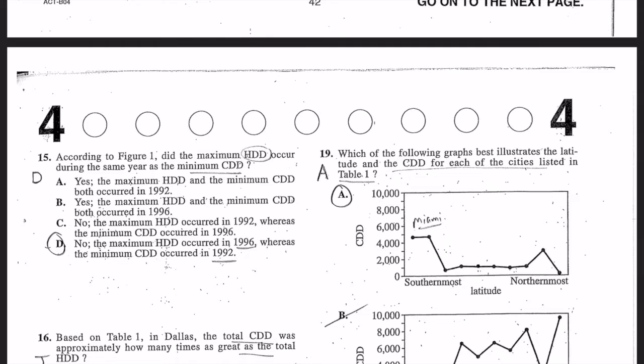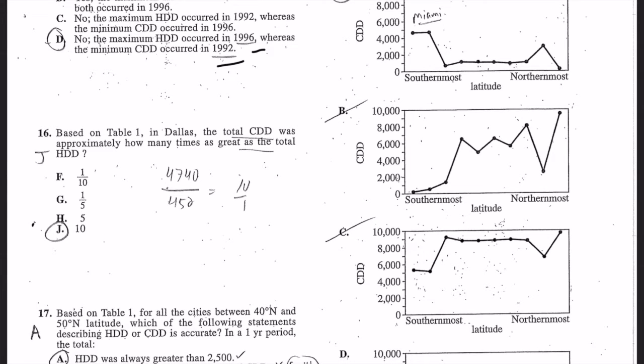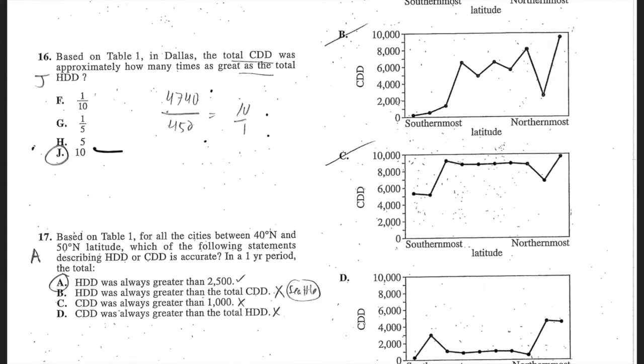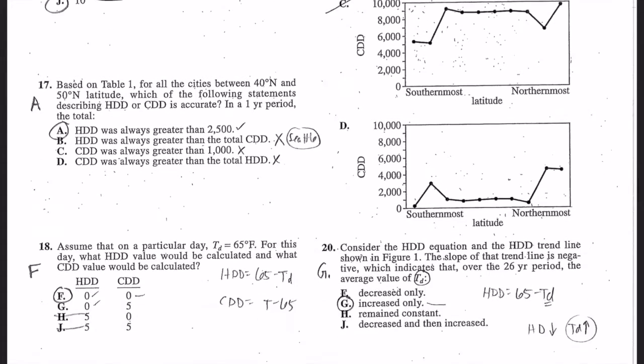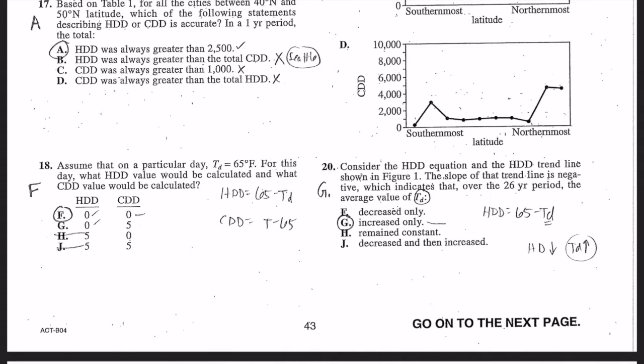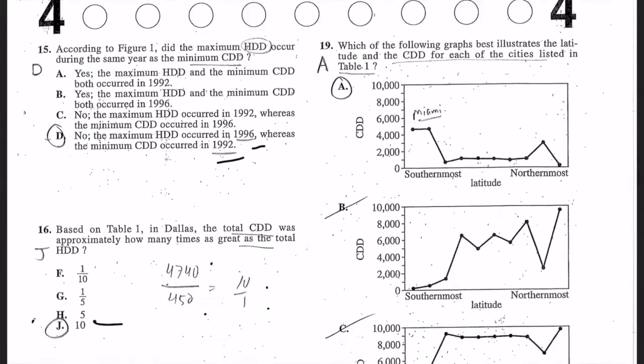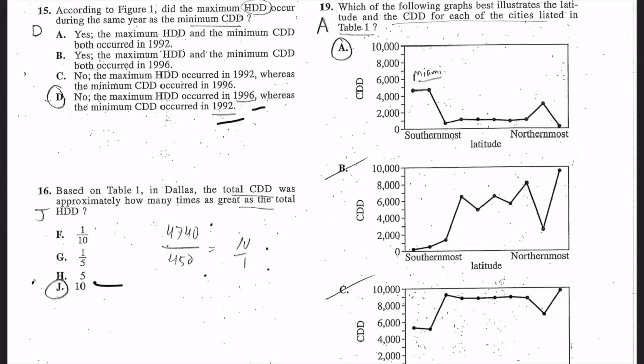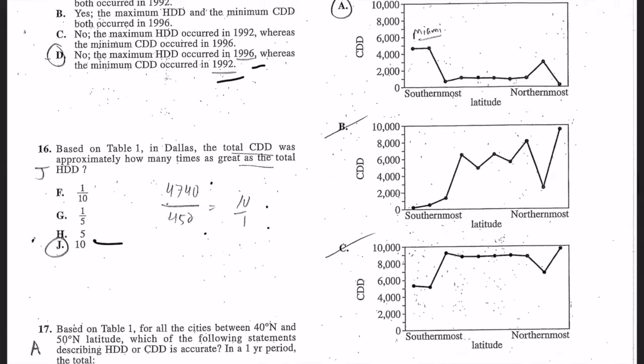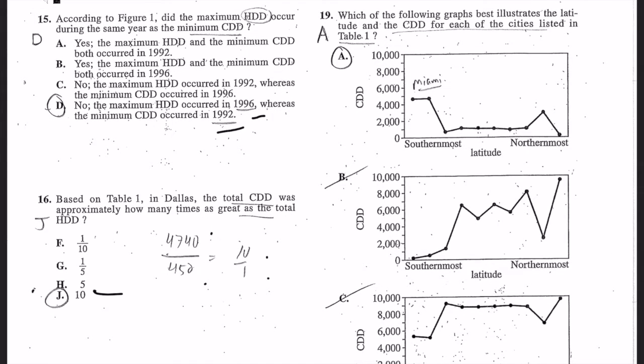Number 15: the minimum HDD is 1992 and the maximum HDD is in 1996, and the minimum CDD is in 1992. They're always looking for min and max trend lines. Number 16: if you look at the table, the CDD for HDD is 4740 to 452, which is a 10 to 1 ratio roughly. Number 17: based on table 1, from 40 to 50, HDD was always greater than 2500 - that's just looking through the data. Number 18: when you have a TD of 65, looking at the formula it's 65 minus that and that minus 65 - both of them are zero. That's just simple math. Number 19: if you graph the CDD for the cities, Miami had the highest - the southernmost had more cooling days because it's hot in Miami.